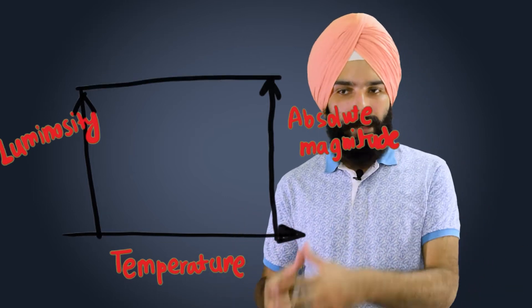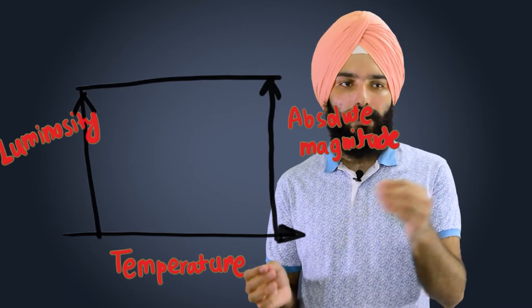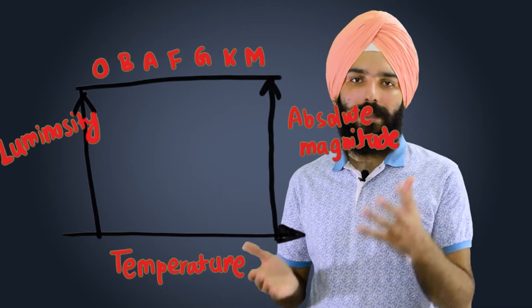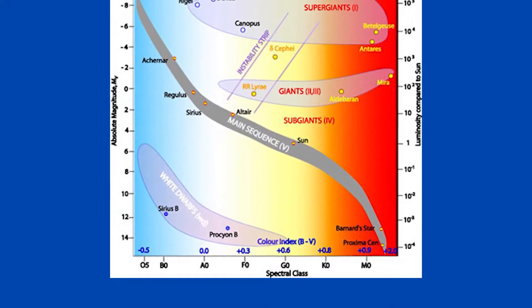You see, we already know the temperature spectral classes which are O, B, A, F, G, K, M. We can just put all of them right here at the top in decreasing order from O to M.